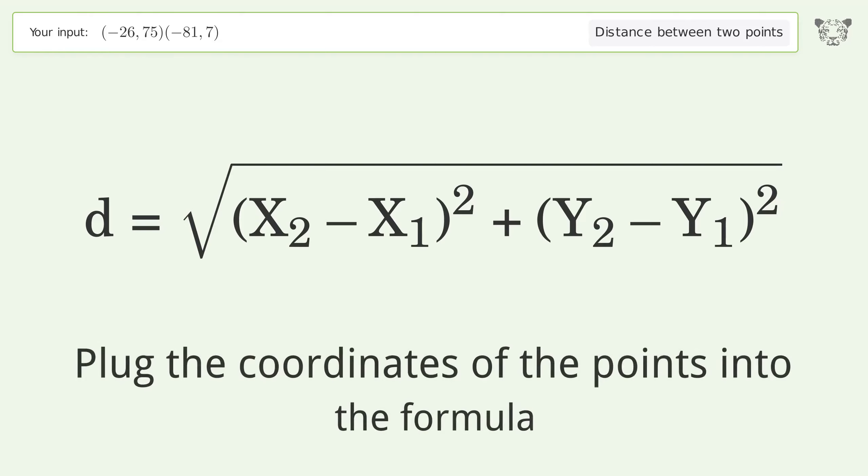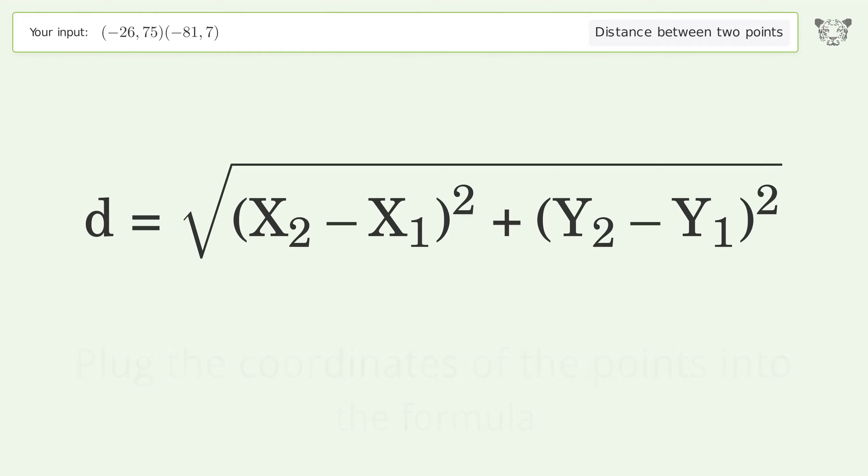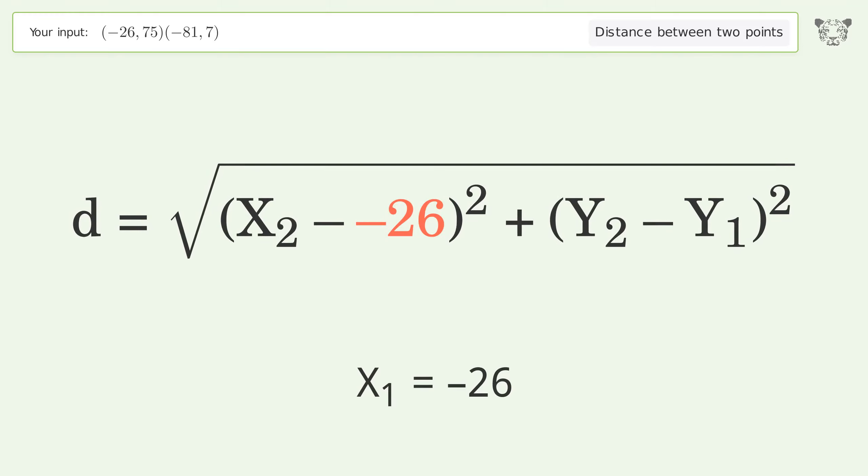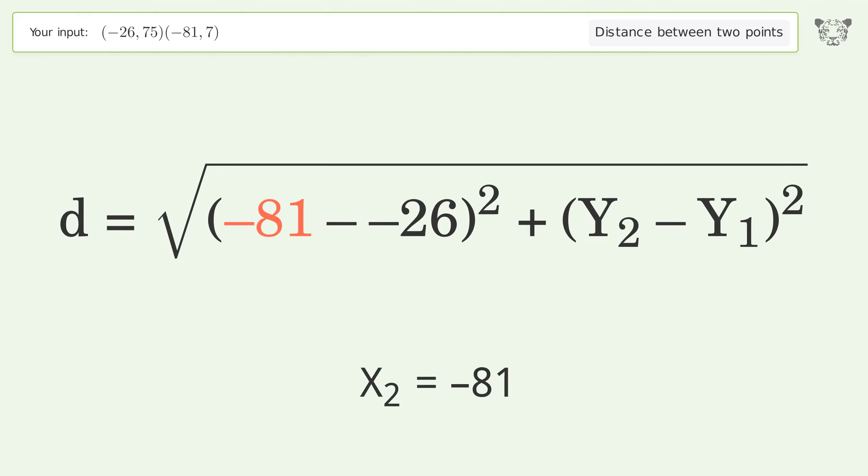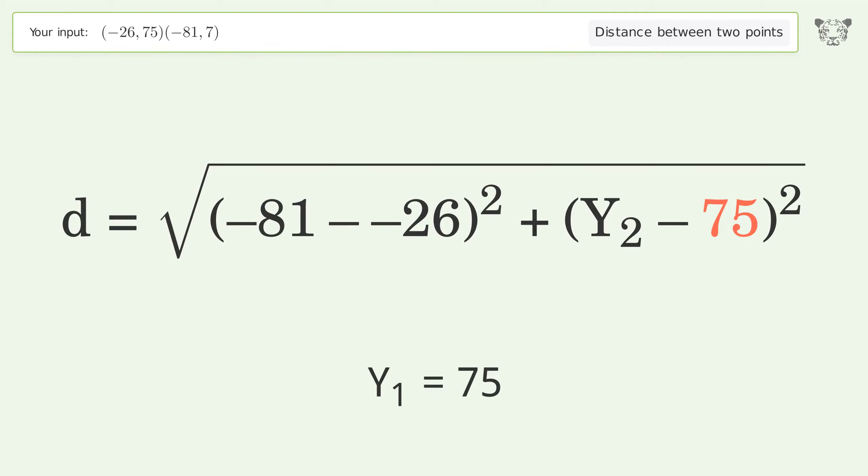Plug the coordinates of the points into the formula: x1 equals negative 26, x2 equals negative 81, y1 equals 75, y2 equals 7.